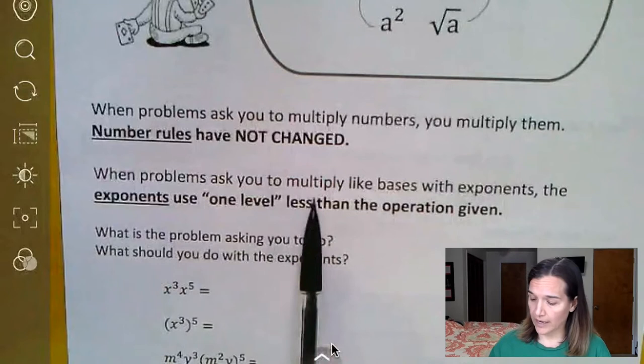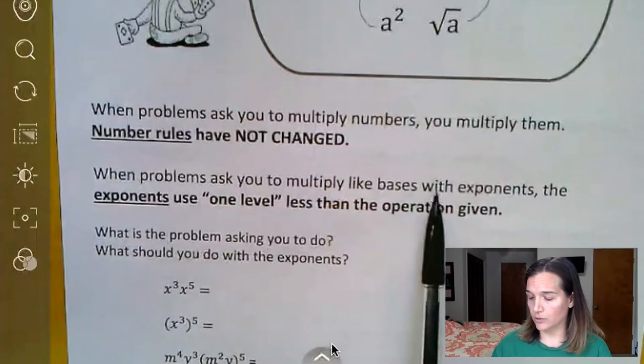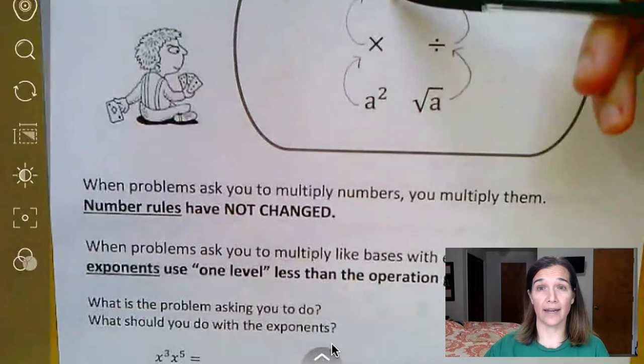But when it asks you to multiply like bases with exponents, the exponents are the one that use one level less than what it's actually asking. So again, if they're asking you to multiply them, then you're going to add the exponents.